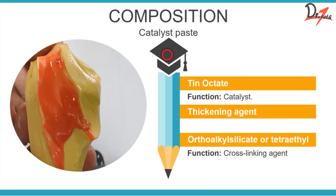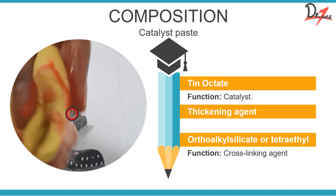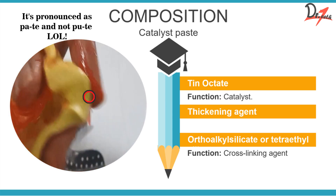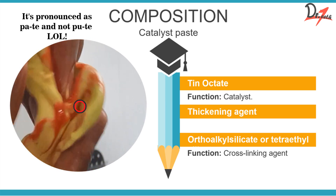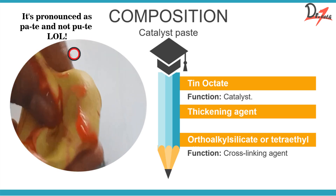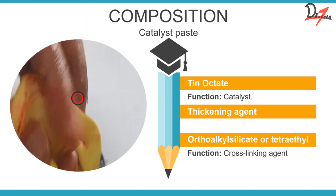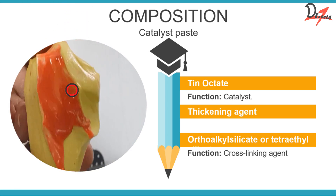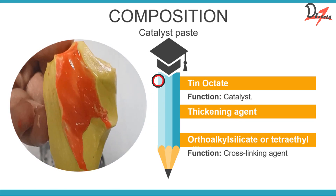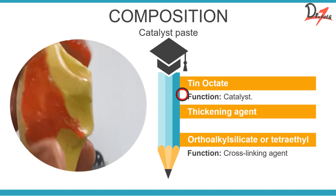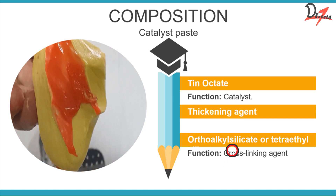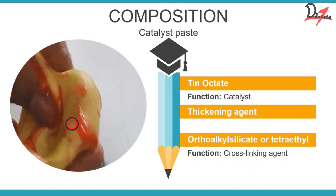Here you can see the orange one is the catalyst and the yellow one is the putty consistency base paste — it depends on the brand what kind of system they provide. In the catalyst paste we have tin octate as the catalyst, a thickening agent, and orthoalkyl silicate (or tetraethyl silicate) which acts as a cross-linking agent.